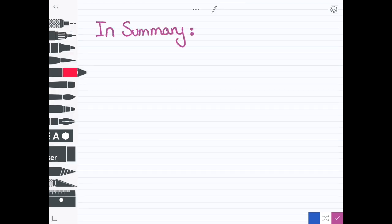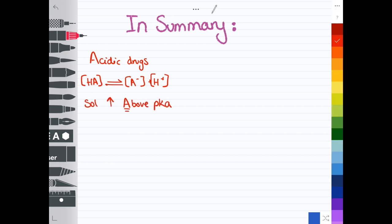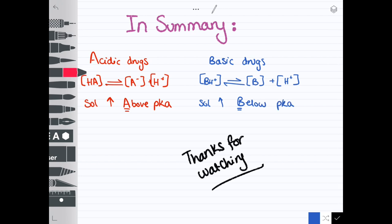In summary, for acidic drugs, this is the equilibrium equation we use. Remember that solubility increases above the pKa. Whereas for basic drugs, this is the equilibrium equation and solubility increases below the pKa.